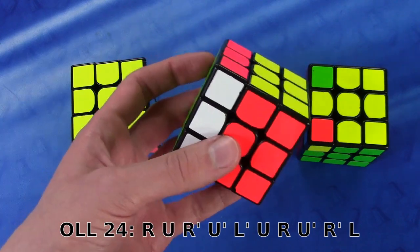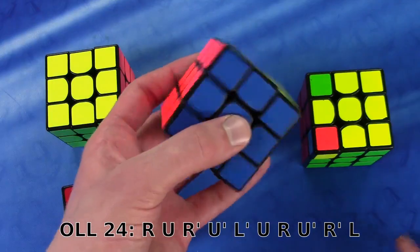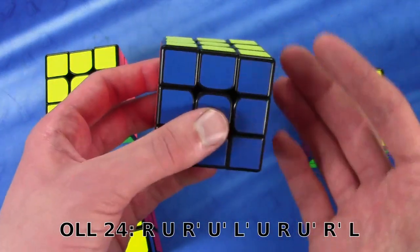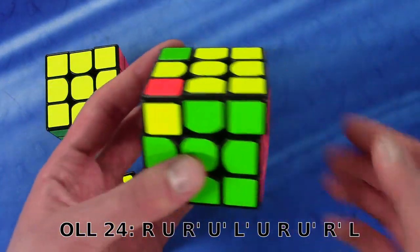And now the last move is an L' and that I would just normally go back a little bit and do this. Often cases, especially if I use this as a COL, it will cancel with a U perm. And that's one of the best things about this alg.